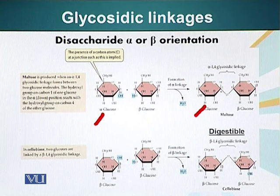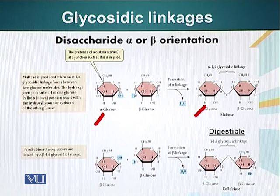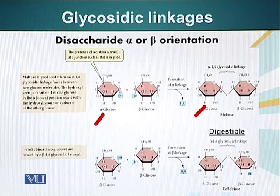It is called alpha-1,4 glycosidic linkage. Glycosidic linkage is the name of the bond between two carbohydrate molecules. Like the bond between two amino acid molecules is called a peptide bond, the bond between two carbohydrate monomers is called a glycosidic bond.